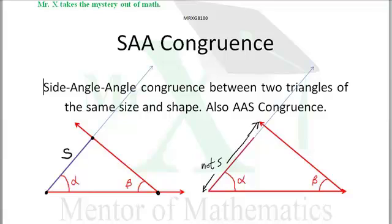There's only one way we can build this triangle with this side, this angle, and this angle. There's only one shape of triangle that will permit that. And that's why we have SAA congruence.